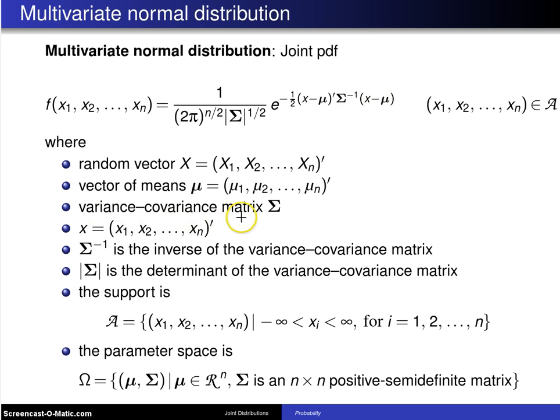The variance covariance matrix in this case is Σ which appears here with an inverse and here with a determinant. X is equal to x1, x2 up to xn. Σ inverse is the inverse of the variance covariance matrix. The bars around the Σ denote the determinant of the variance covariance matrix.